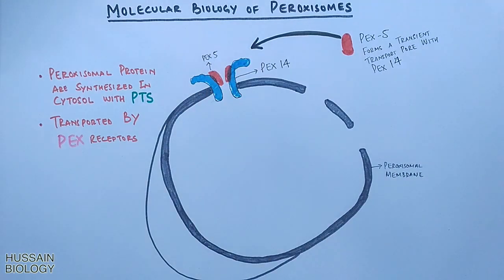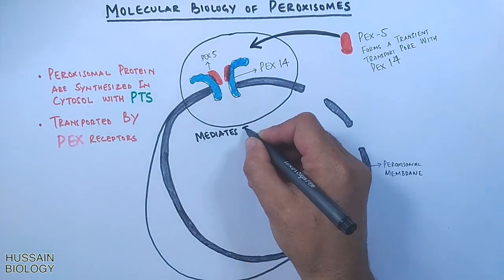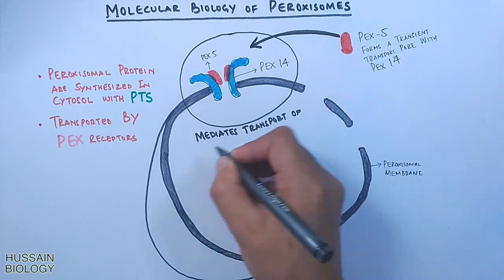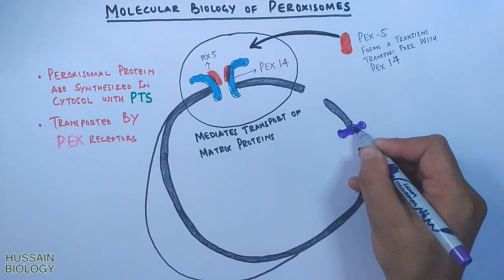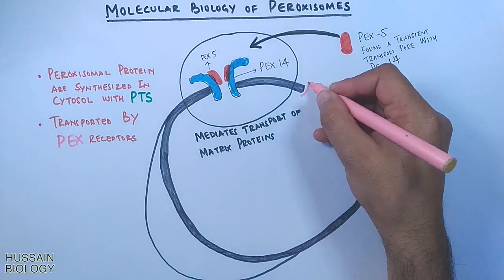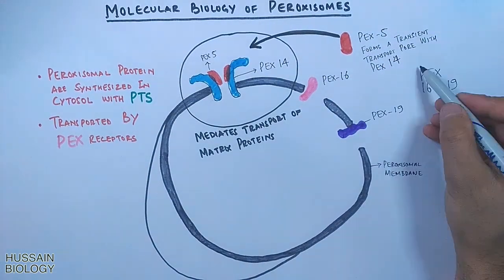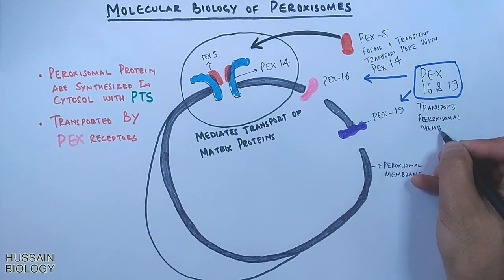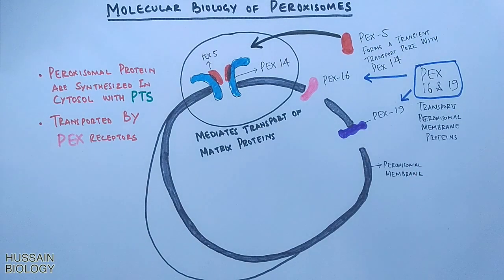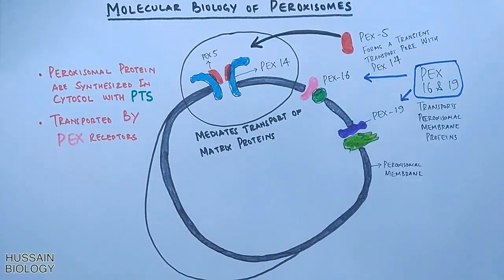The complex channel formed by PEX14 and PEX5 mediates the transport of matrix targeting proteins to the peroxisomes. Additionally, PEX16 and PEX19 in the peroxisomal membrane mediate the transport of peroxisomal membrane proteins, and many other PEX proteins are present with different minor roles.